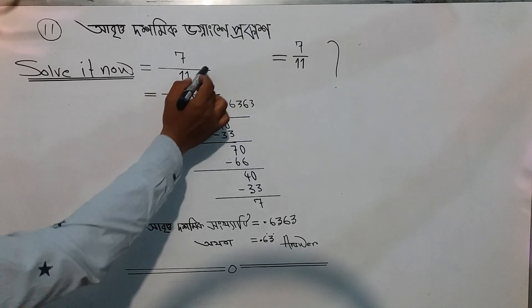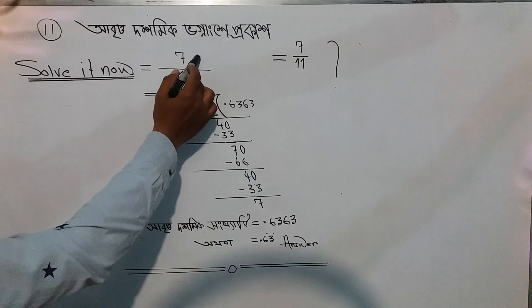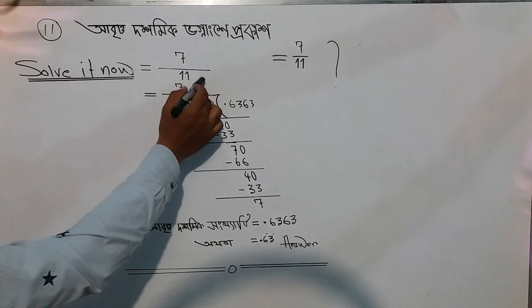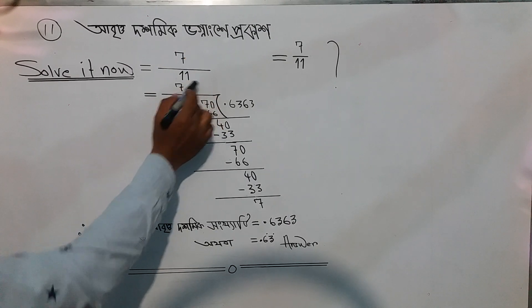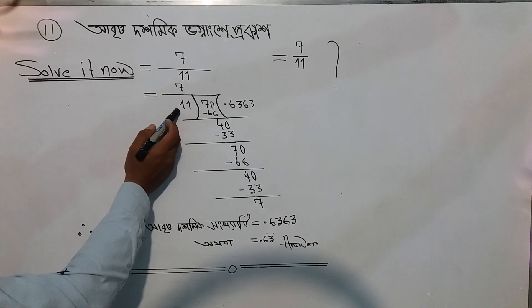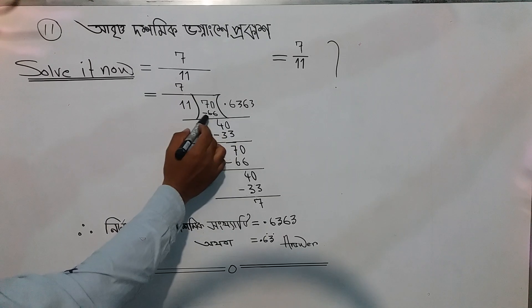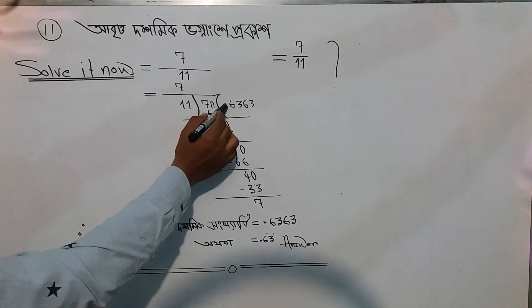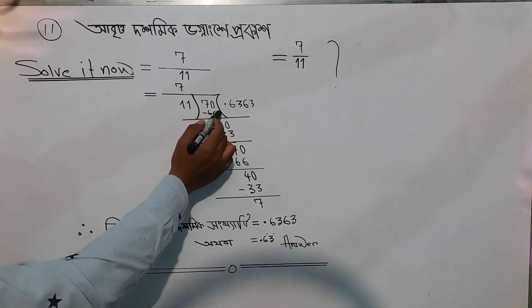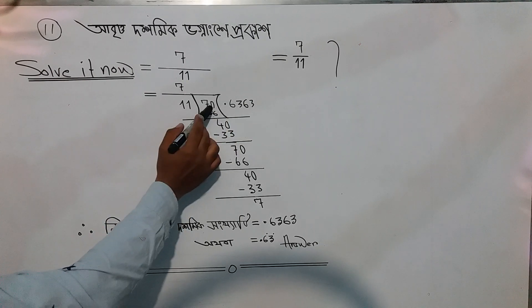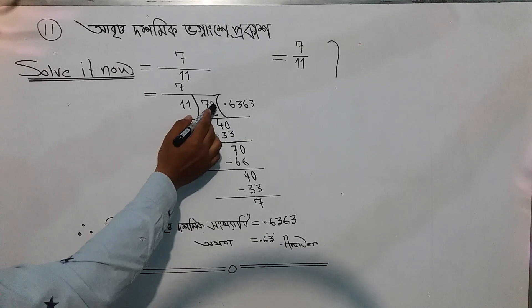So I'm ready to solve it. Let's start: seven divided by eleven. We are dividing it as a decimal. In decimal, when we have seven, we add a zero to make it seventy.